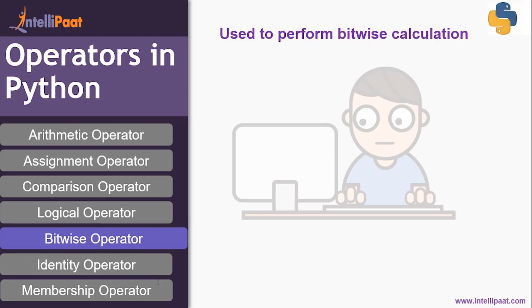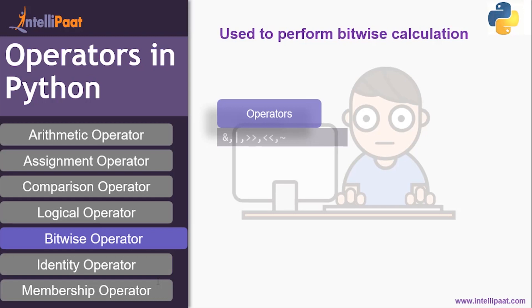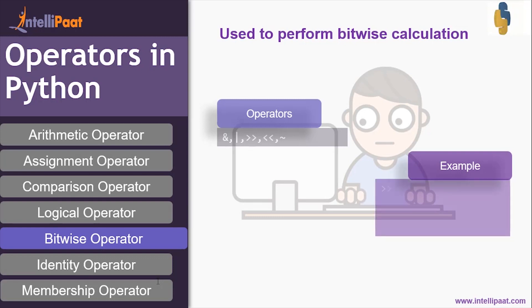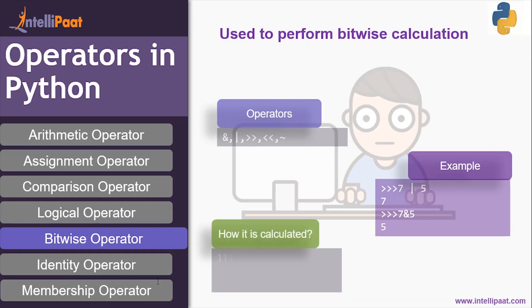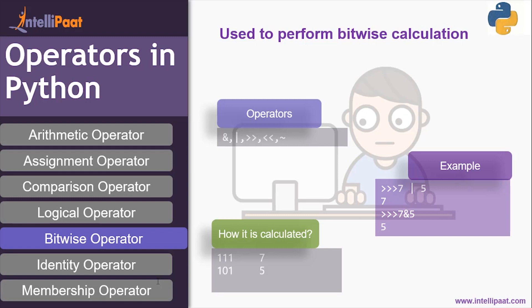Next we have the bitwise operator, used to perform bitwise calculations. It includes AND, OR, left shift, right shift, and NOT. For example: 7 OR 5 gives 7, and 7 AND 5 gives 5. If you convert 7 to binary it's 111, and 5 is 101. Performing OR is binary addition: 1+1=1, 1+0=1, 1+1=1, giving 111 which is 7. Performing AND is binary multiplication.